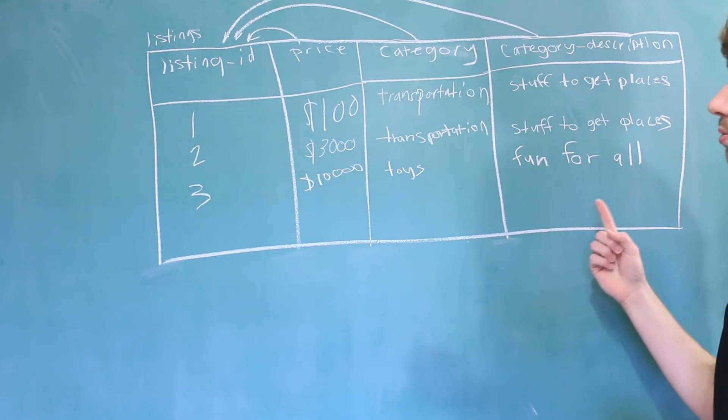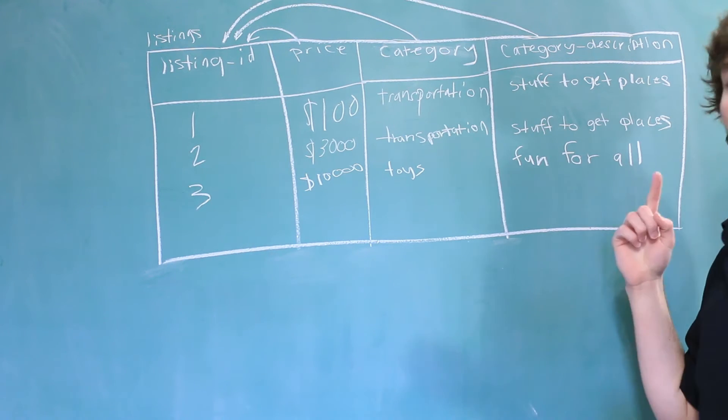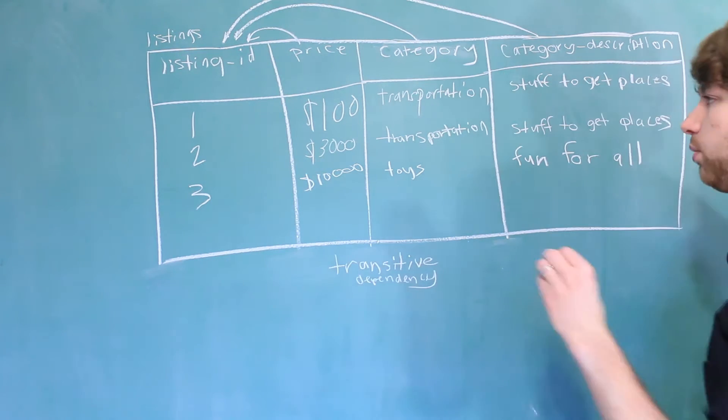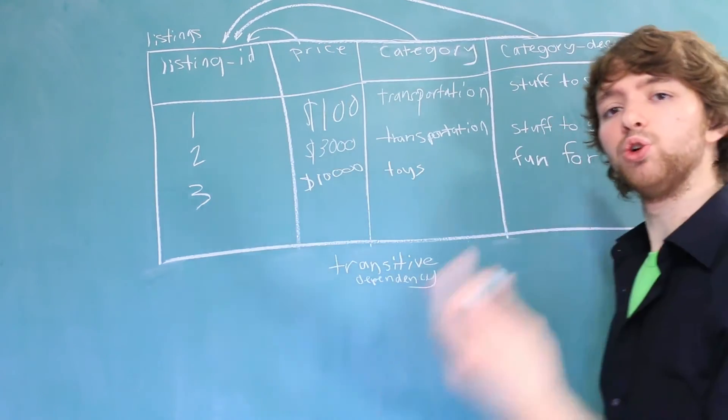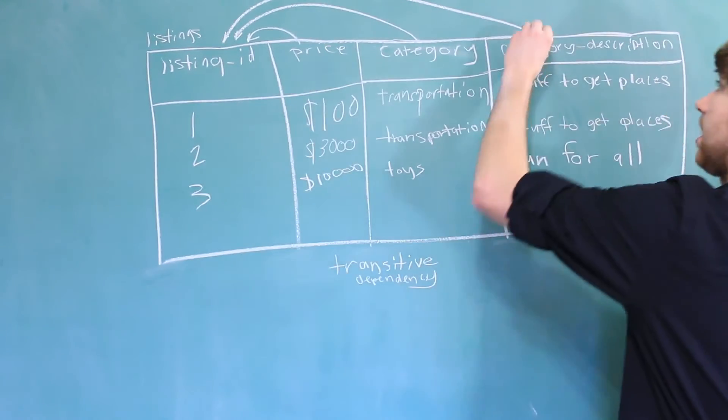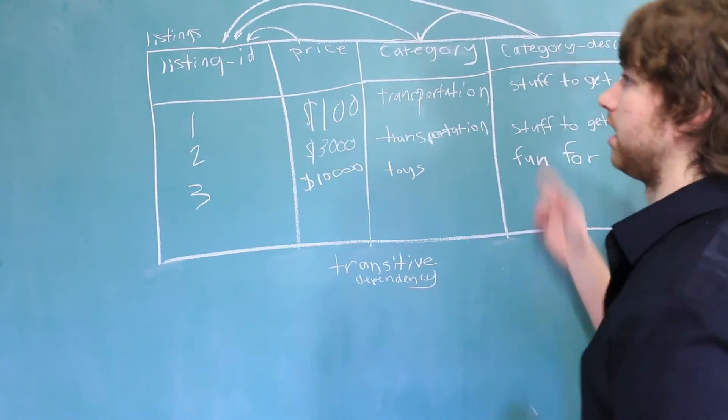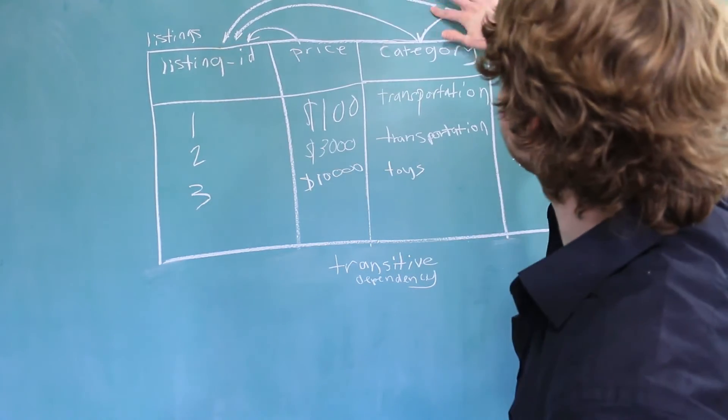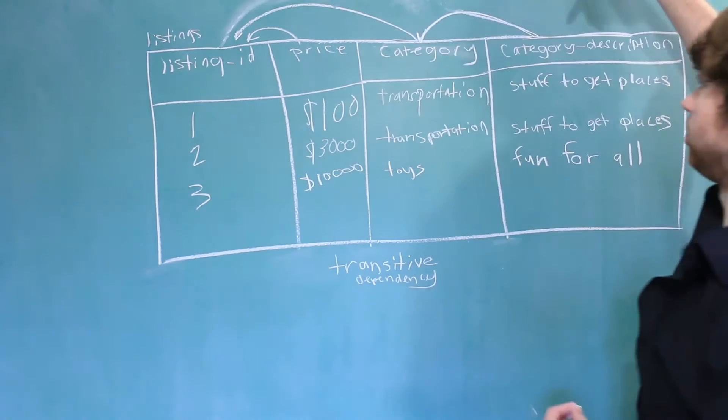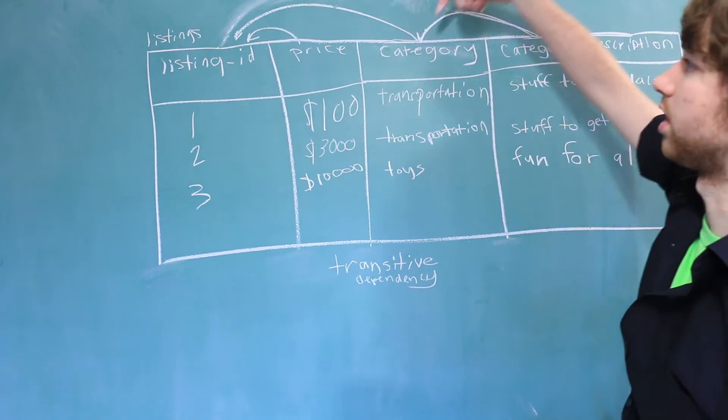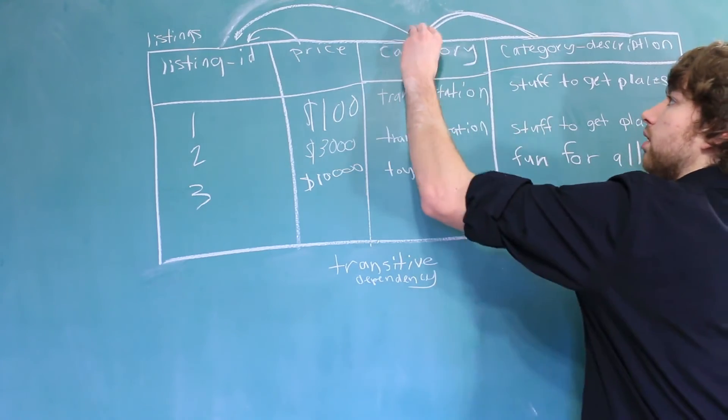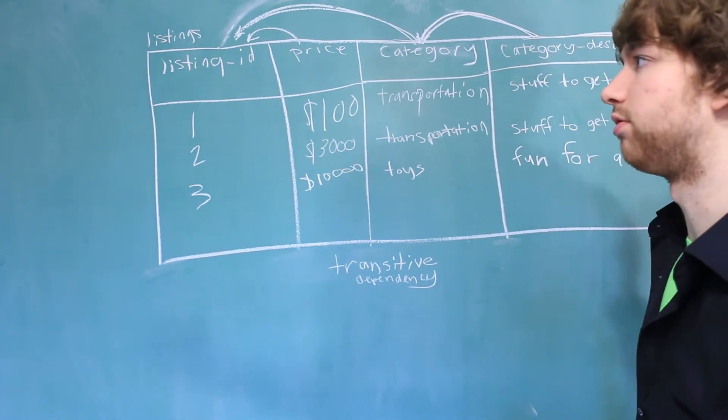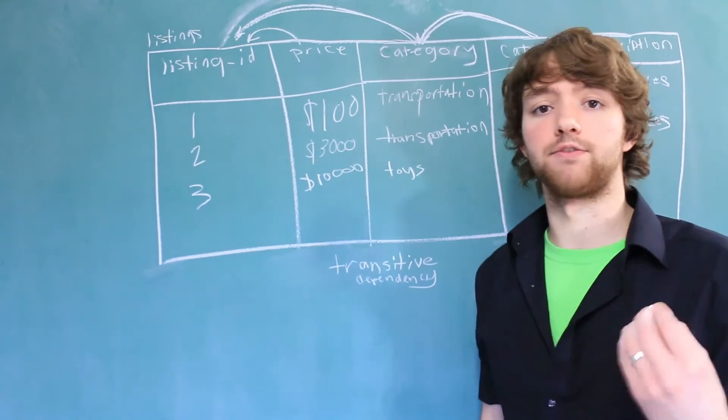The odd thing though about this column is it's a type of dependency known as a transitive dependency. And what that means is it depends on the primary key through another column. So it actually depends on this category which depends on the listing. So this arrow can be erased. And you can see that the category description is still connecting to the listing ID. So you get this kind of hop. These are bad. And third normal form says you're not allowed to have transitive dependencies.